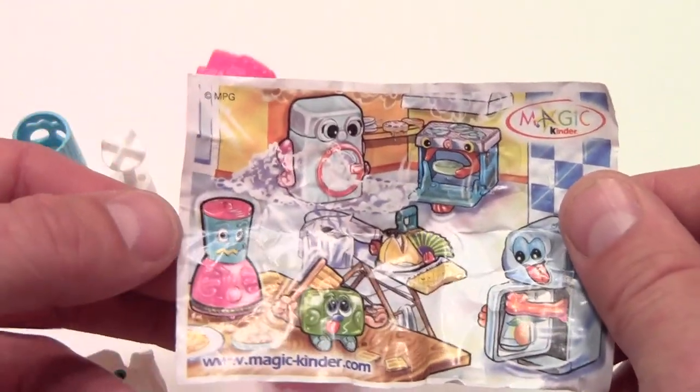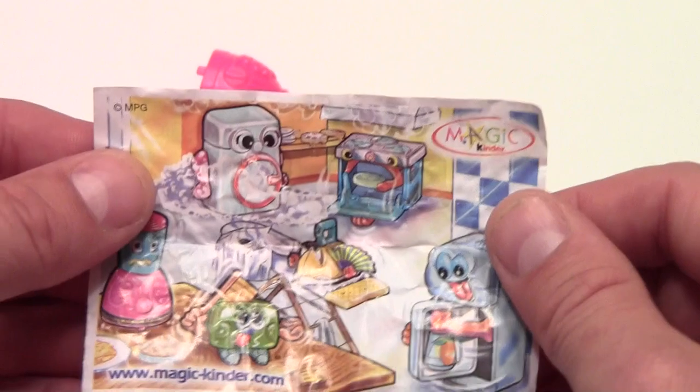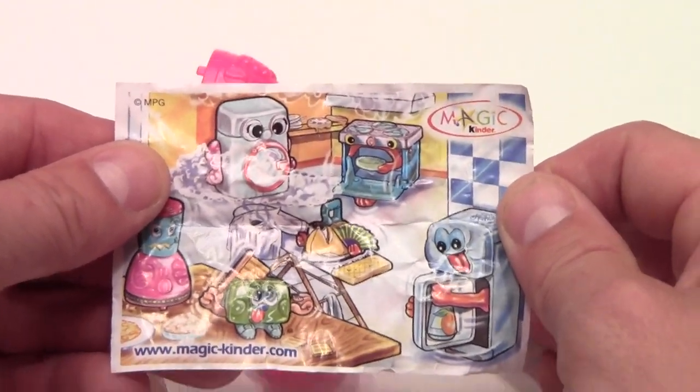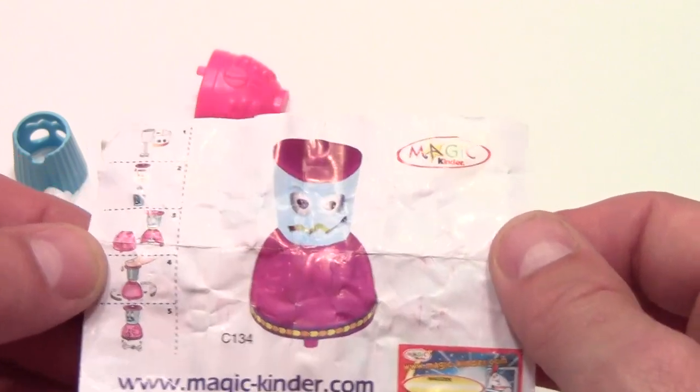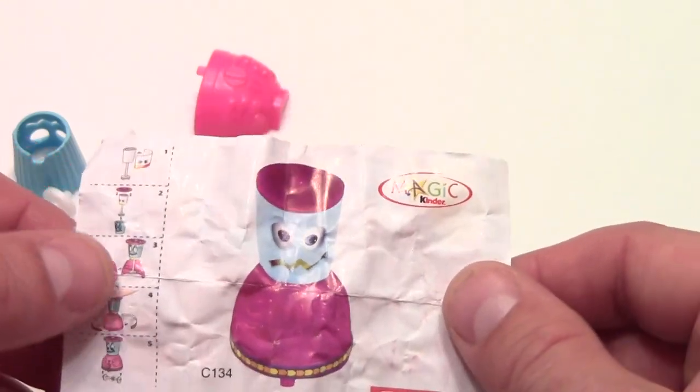As you can see here, it looks to me like we've got the blender but these are a bunch of personified kitchen appliances. And here's the instructions, fairly simple but it looks to be a crazy faced blender.